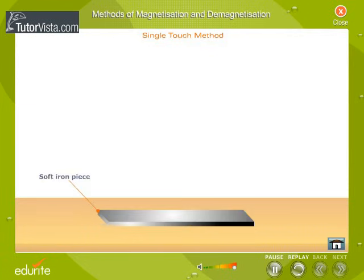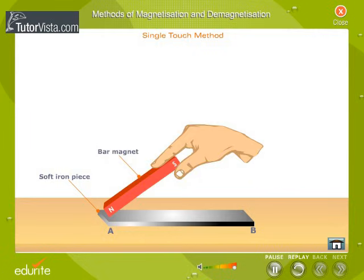Place a soft iron piece AB to be magnetized on a table. Take a bar magnet and place one of its poles on the soft iron piece as shown here.